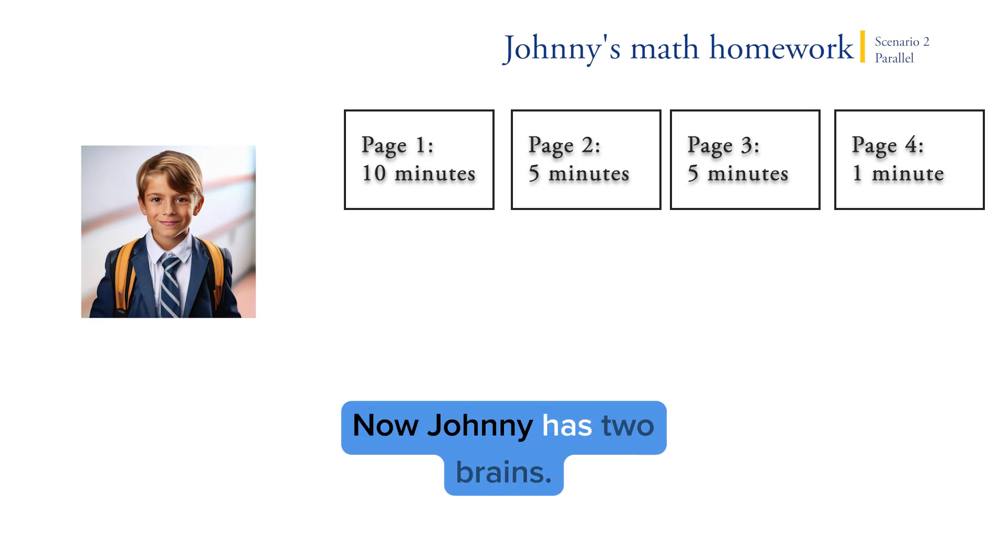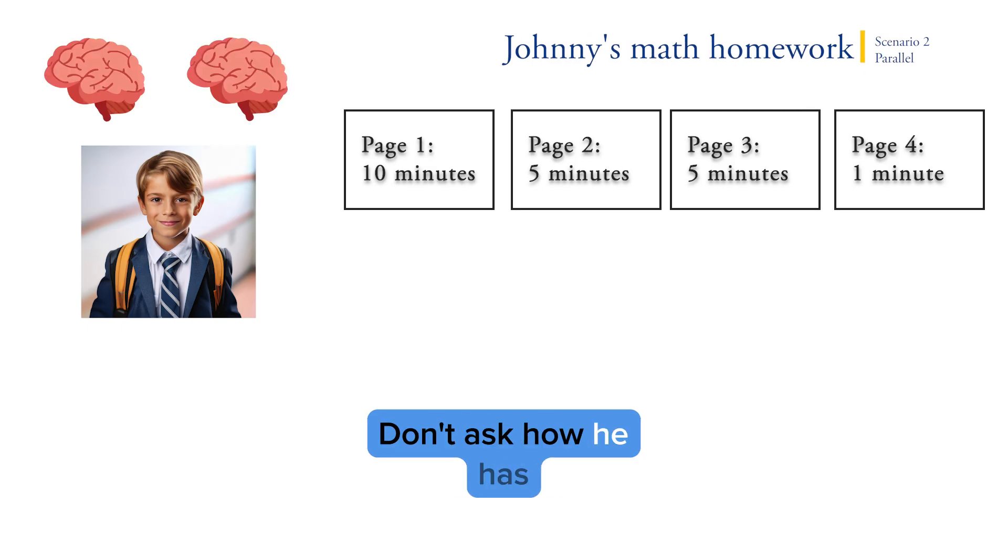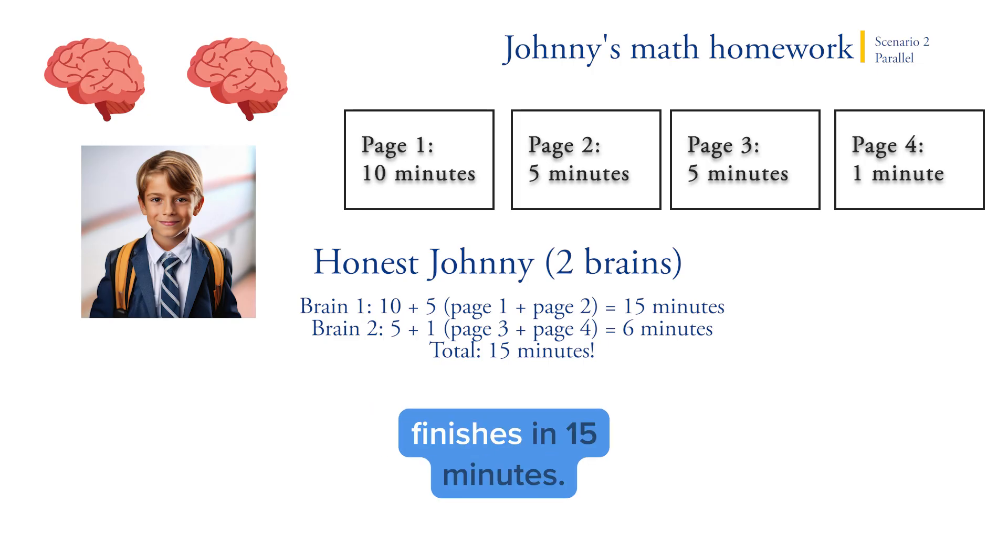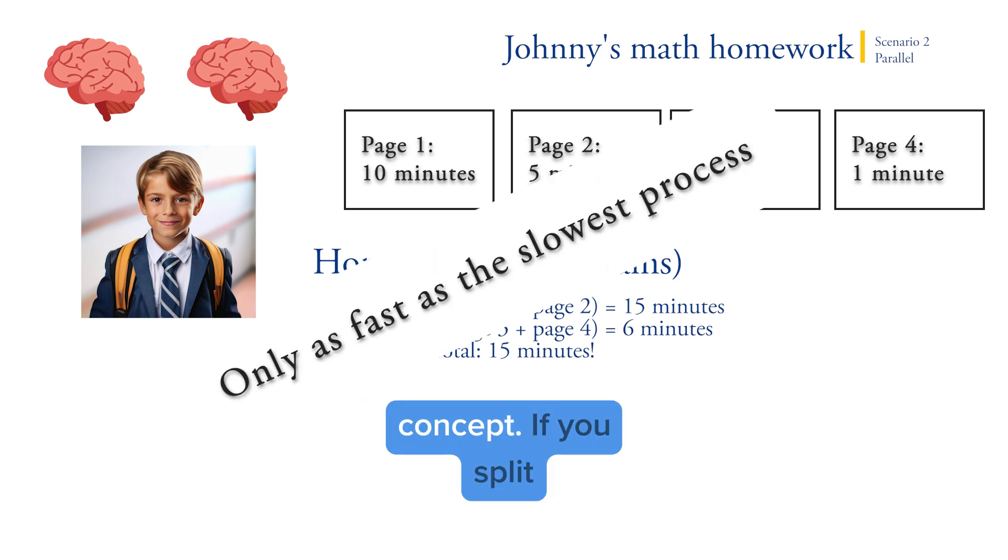Scenario two. Now Johnny has two brains. Don't ask how he has two brains, just assume that it is. With these two brains, the homework is still the same, but now he has two brains. Let's say brain one finishes in 15 minutes if it does pages one and two. Brain two finishes in 6 minutes if it does pages three and four. But even though brain two finishes earlier, Johnny can't be done with the homework until everything finishes. All four pages need to be done. This is an important concept. If you split stuff up, you are only as fast as your slowest brain, or in computer terms, your slowest process.